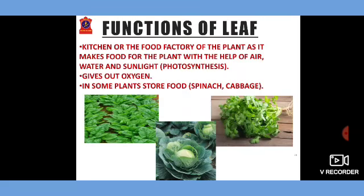Functions of leaf. Children, as you all know, plants are autotrophic in nature. Autotrophic means they can prepare their own food. Plants have leaves — leaves are the kitchen or the food factory of the plant, as leaves make food for the plant with the help of air, water and sunlight. The process by which leaves prepare food for the plant is known as photosynthesis. Another function of leaf is it gives out oxygen, which is very important for us — we breathe in oxygen gas. So, leaves give oxygen gas to us.